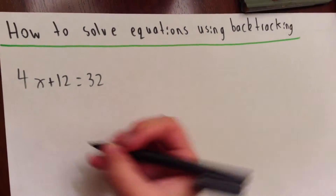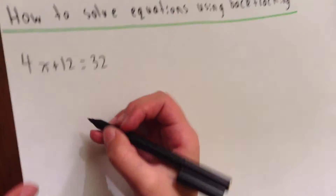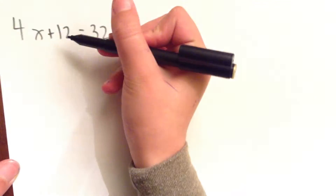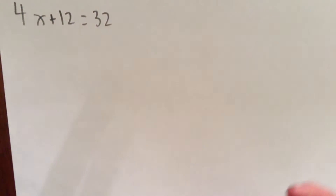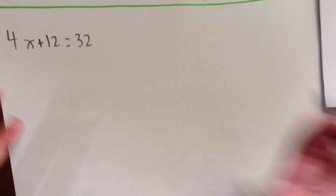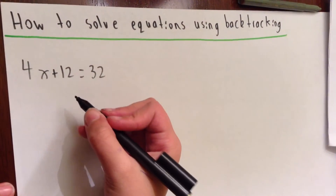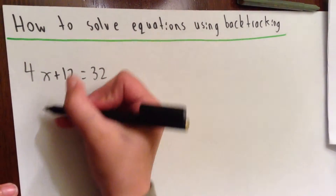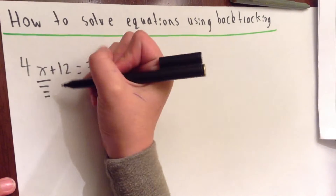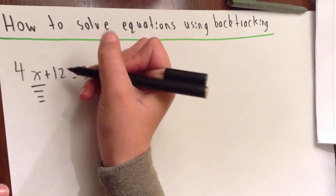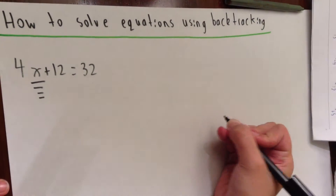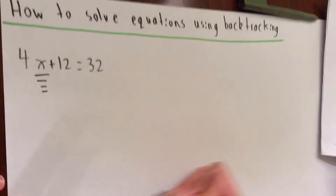Let's start off with an easy question. First we have 4x plus 12 equals 32. The main purpose is to find what x is — so what's the value of x? To do that, we need to draw a flow chart and do a process called backtracking.